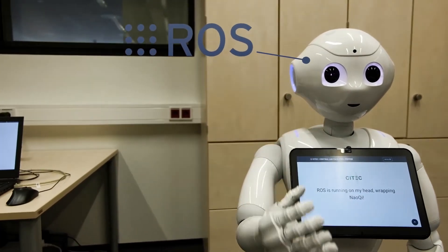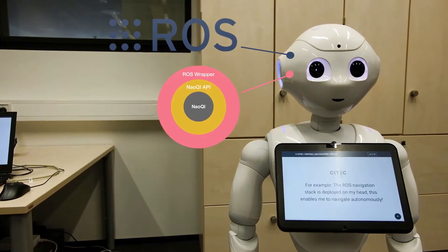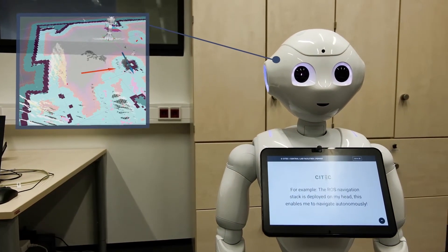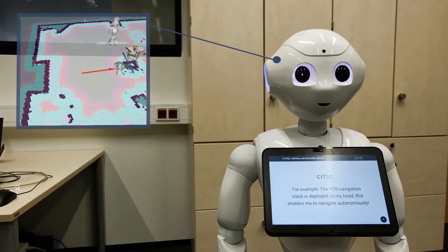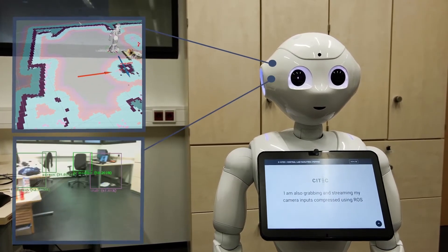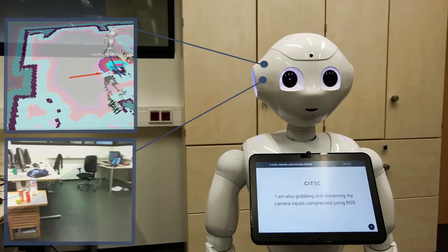ROS is running on my head, wrapping the NAOqi. For example, the ROS navigation stack is deployed on my head. This enables me to navigate autonomously. I am also grabbing and streaming my camera inputs compressed using ROS.